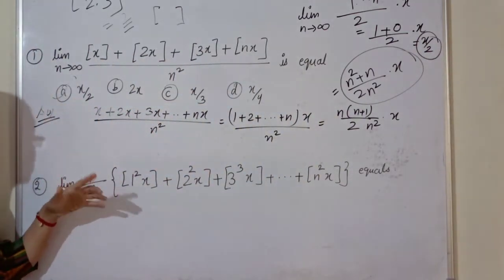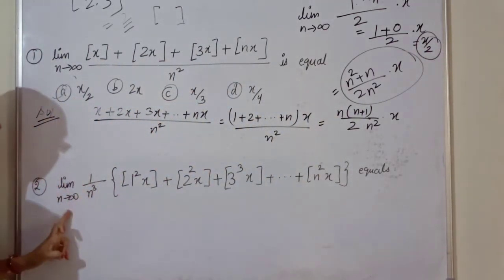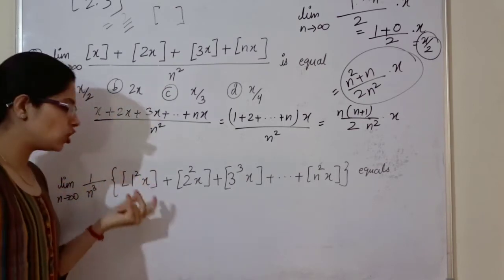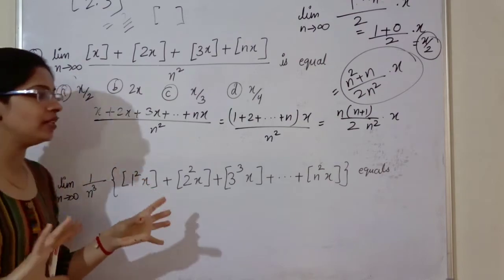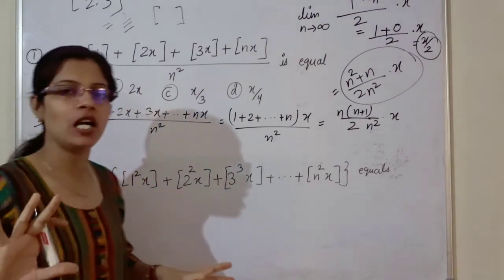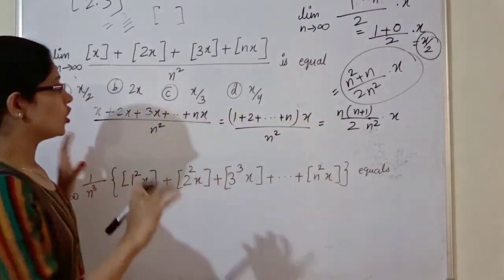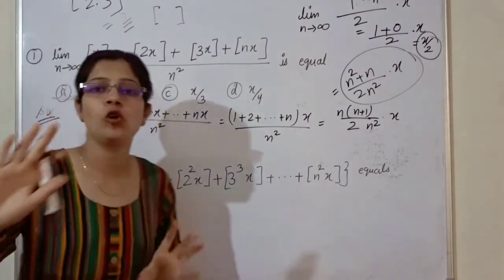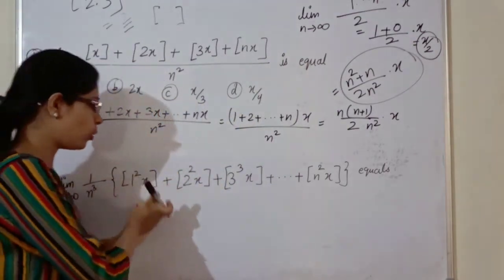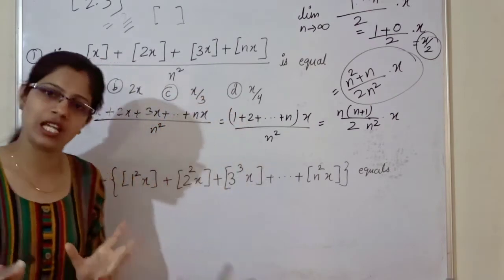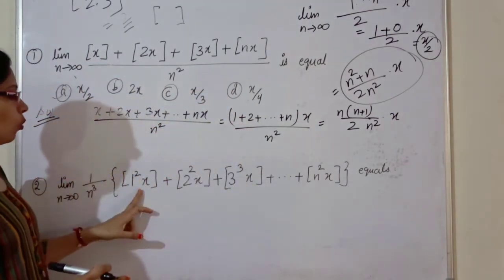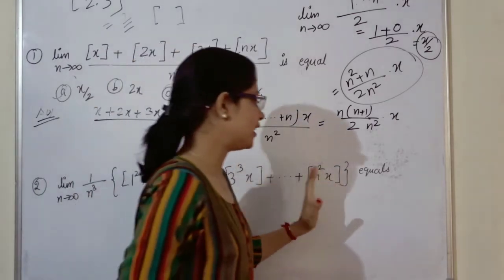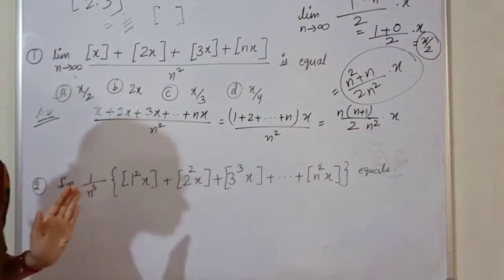Similarly, for the second question: limit as n approaches infinity of 1 by n cube times the sum of greatest integer functions — whether it is 1 squared times x, 2 squared times x, and so on up to n squared times x. The greatest integer of n squared into x is written simply as the function.